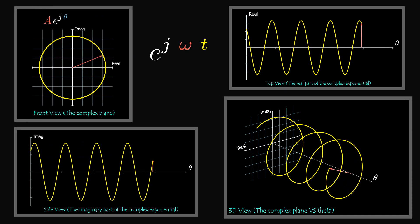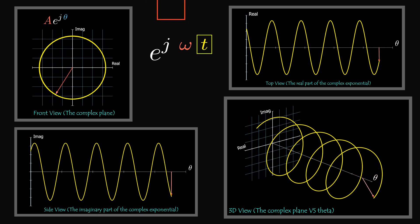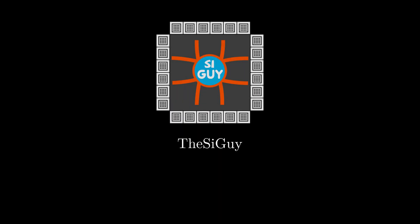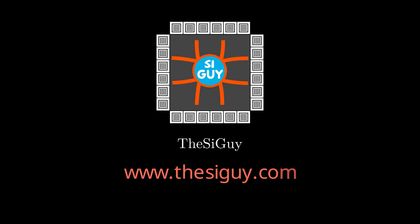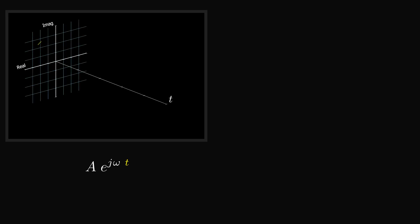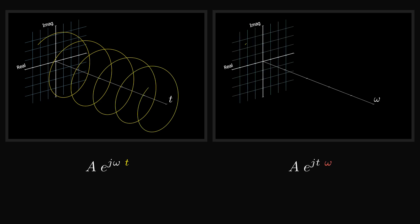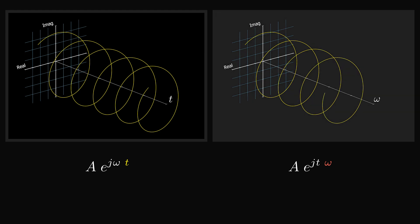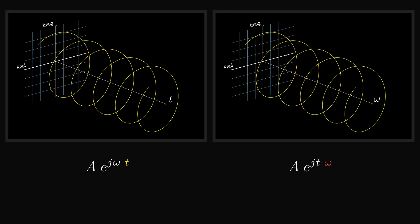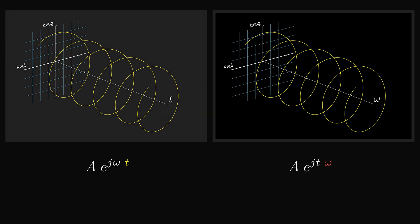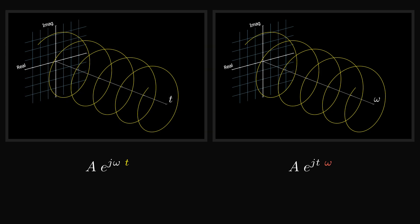Usually in electrical engineering the phase angle is a function of two variables: time and frequency. We can plot the complex exponential with respect to time while the frequency is constant, or we can plot it versus frequency at a single instant of time. The plot versus frequency is called the frequency domain representation, while the plot versus time is called the time domain. Frequency and time domains enable us to look at the function from different perspectives.